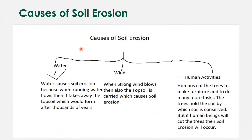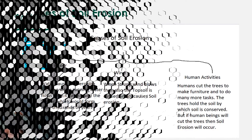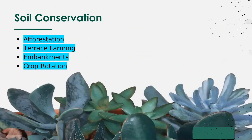This is a mind map of causes of soil erosion. Soil conservation. These are the four steps by which we can conserve soil: afforestation, terrace farming, building embankments, and crop rotation.